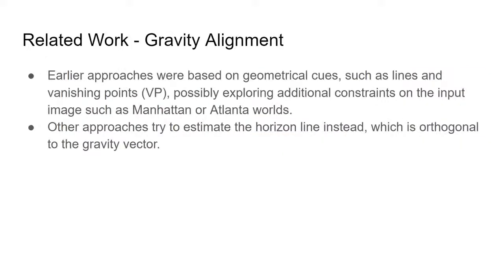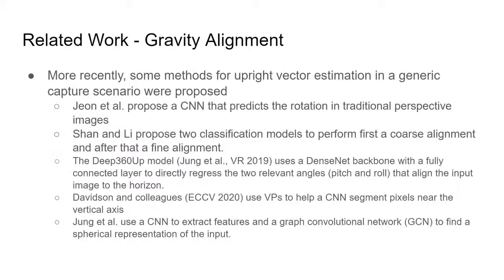Our pipeline combines gravity alignment with depth estimation and can be used with any existing depth estimation method. For gravity alignment, earlier approaches were based on geometrical cues such as lines and vanishing points. Those methods usually work well on man-made environments. Other approaches try to estimate horizon lines and usually work well in natural scenes, but don't work well when the horizon line is occluded. More recently, deep learning-based methods were used to create techniques for generic capture scenarios.